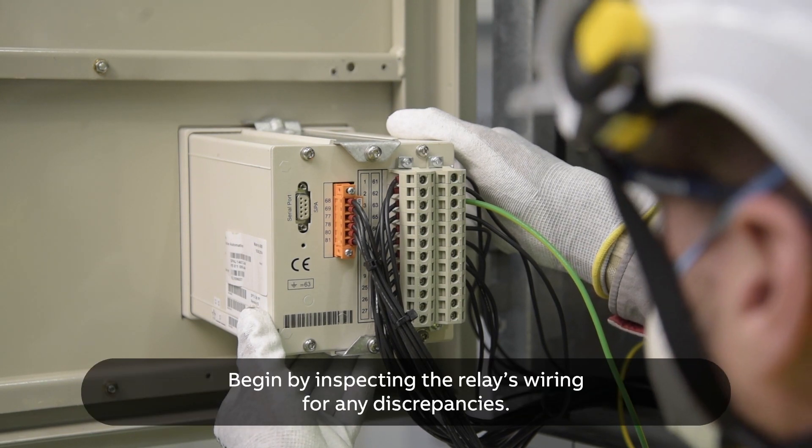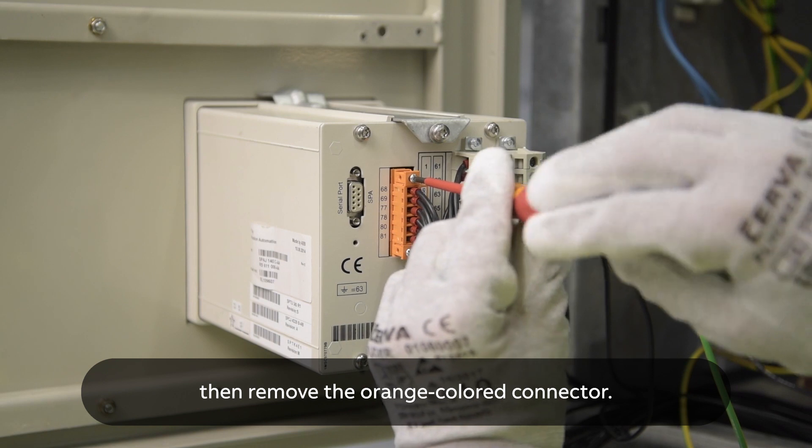Begin by inspecting the relay's wiring for any discrepancies, then remove the orange colored connector.